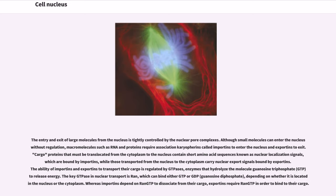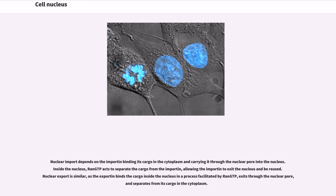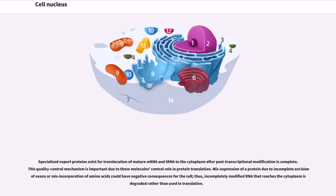Whereas importins depend on Ran-GTP to dissociate from their cargo, exportins require Ran-GTP in order to bind to their cargo. Nuclear import depends on the importin binding its cargo in the cytoplasm and carrying it through the nuclear pore into the nucleus. Inside the nucleus, Ran-GTP acts to separate the cargo from the importin, allowing the importin to exit the nucleus and be reused. Nuclear export is similar, as the exportin binds the cargo inside the nucleus in a process facilitated by Ran-GTP, exits through the nuclear pore, and separates from its cargo in the cytoplasm. Specialized export proteins exist for translocation of mature mRNA and tRNA to the cytoplasm after post-transcriptional modification is complete. This quality control mechanism is important due to these molecules' central role in protein translation. Misexpression of a protein due to incomplete excision of exons or mis-incorporation of amino acids could have negative consequences for the cell. Thus, incompletely modified RNA that reaches the cytoplasm is degraded rather than used in translation.